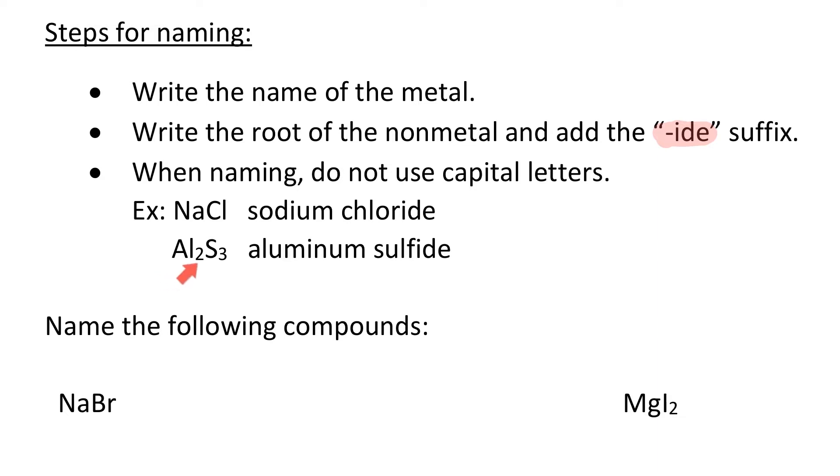Let's take a look at the second example. You can see here is Al2S3. For this example, we start out by writing the name of the metal in no capitals, so it's aluminum here. The nonmetal is S, and that is sulfur. So we write sulfur, and the root of sulfur is "sulf."